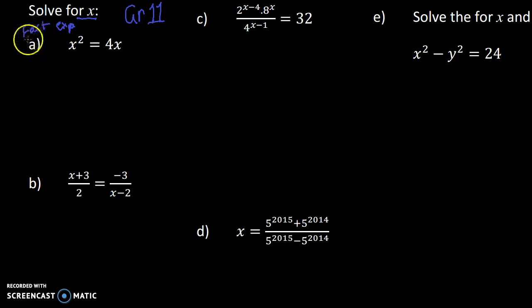So let's start with question a. We've got x² = 4x. Now because it is a quadratic equation, and I know that because of the square, I'm going to make it equal to 0 and then I'm going to factorize it by taking out a common factor of x. So that leaves me now with x times by (x - 4) = 0.